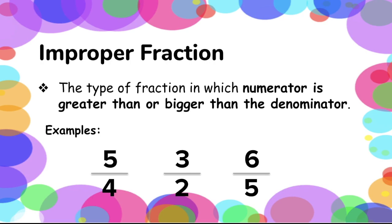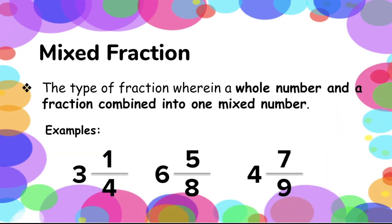Our third type is called mixed fractions. These are the types of fractions wherein a whole number and a fraction are combined into one mixed number. Instead of having a numerator and denominator only, we also have a whole number as part of our mixed number. For example: 3 and 1 fourths, 6 and 5 over 8, and 4 and 7 over 9. In our first example, 3 and 1 fourths, our numerator is 1, our denominator is 4, and our whole number is 3.